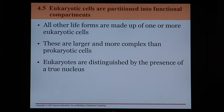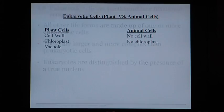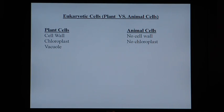All other life forms are made up of one or more eukaryotic cells, which includes plants and animals. These are larger, more complex cells that have a true nucleus. We're going to look at the two types of eukaryotic cells: the plant cell and the animal cell. Both are eukaryotic and both have a nucleus, but there are some differences between them. Let's begin with the animal cell.